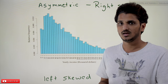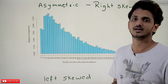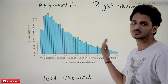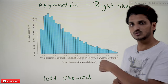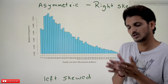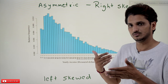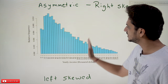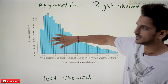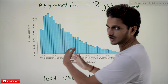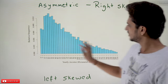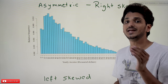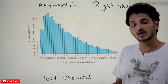For right skewed distributions, using the mean to calculate central tendency is not a good approach. This is because the mean is pulled toward the maximum value, as discussed in previous classes. If you apply the mean, you get a value far from where most data points lie — most of the population is on the left-hand side. In these situations, the median is the best practice to calculate central tendency.